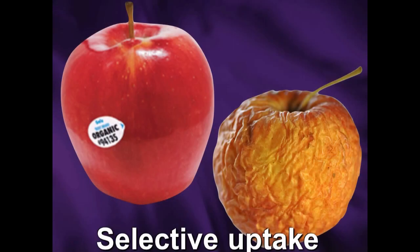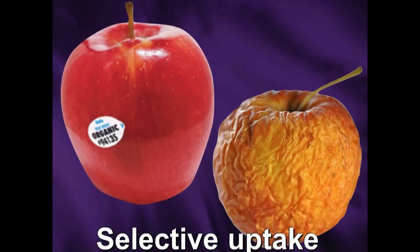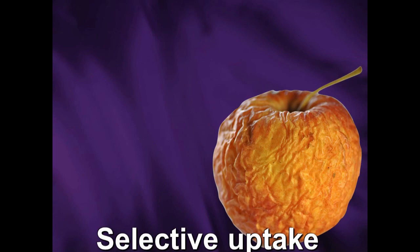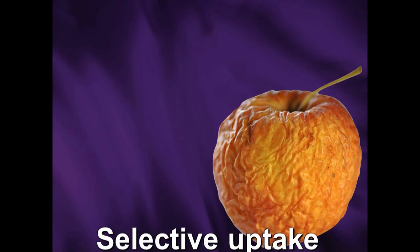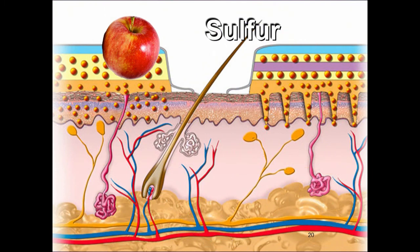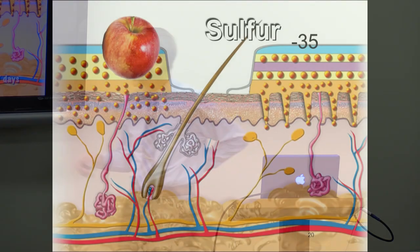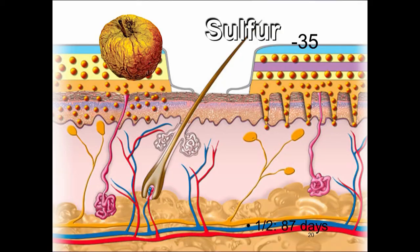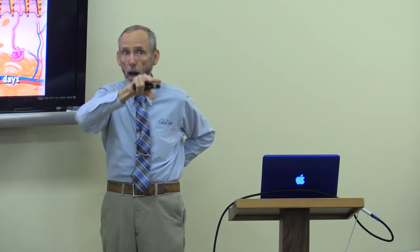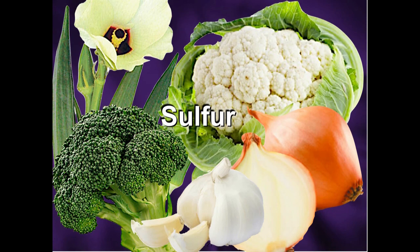Selective uptake: the body will take the bad when the good isn't available. There's a radioactive isotope called sulfur-35 with a half-life of 87 days. If you don't get good sulfur from food, the body will take sulfur-35. Where do we find sulfur? In cruciferous vegetables, onions, and garlic — we should be eating some every day. Potassium is good for your muscles, kidneys, sex organs, and liver. If you're not getting enough potassium, the body will take cesium-137, which has a half-life of 30 years. Get your potassium from plant kingdom sources like soybeans and broccoli.